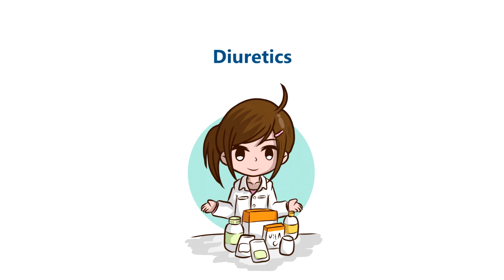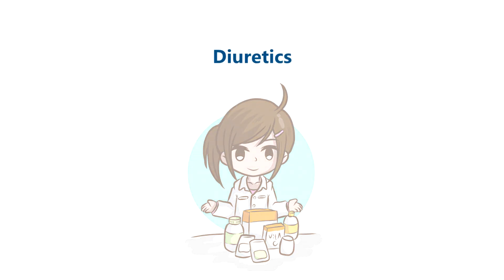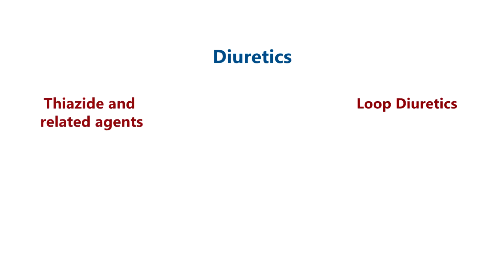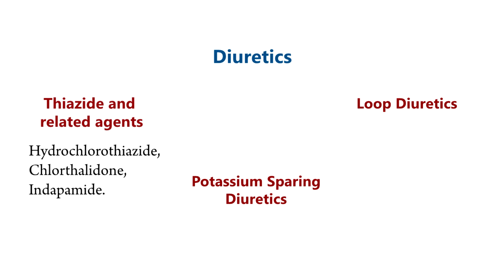Diuretics are classified into three classes: Thiazide and Related Agents, Loop Diuretics, and Potassium Sparing Diuretics. Thiazide and Related Agents include Hydrochlorothiazide, Chlorthalidone, and Indapamide. Loop Diuretics include Furosemide, Bumetanide, and Torsemide.